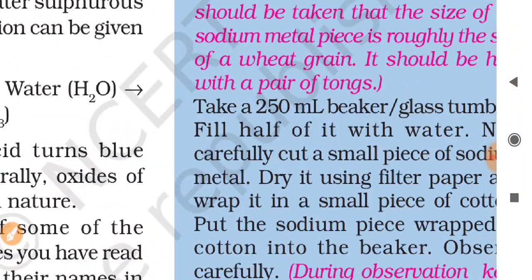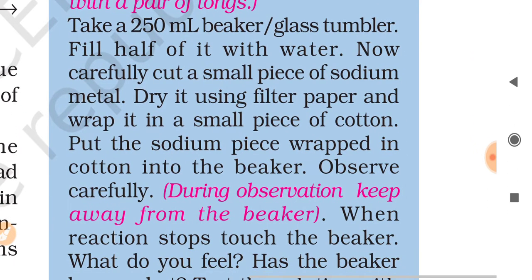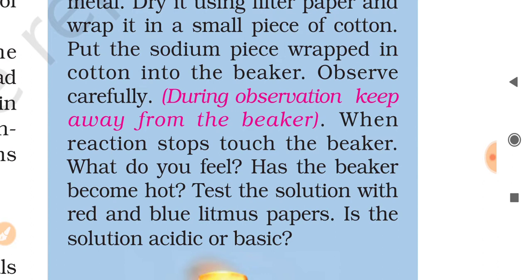First you have to do an activity to be demonstrated by teacher. During demonstration special care should be taken that the size of the sodium metal piece is roughly the size of a wheat grain. It should be held with a pair of tongs because it reacts vigorously. So you don't do this activity at your home. Take a 250 mL beaker or glass tumbler, fill half of it with water. Now carefully cut a small piece of sodium metal, dry it using filter paper, and wrap it in a small piece of cotton. Put the sodium piece wrapped in cotton into the beaker. Observe carefully.